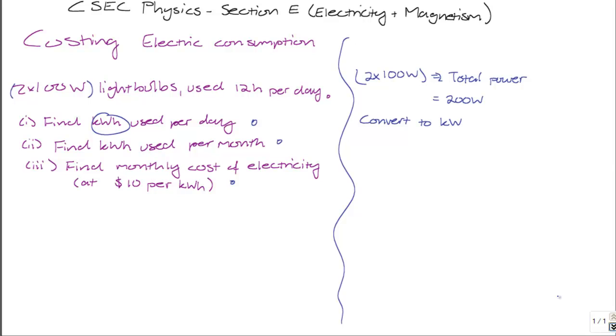Now, one kilowatt is equal to 1000 watts. So the amount of power used by these two light bulbs can be converted to kilowatts by dividing the total consumption, 200 watts, divided by 1000 watts, because there are 1000 watts in every kilowatt, which gives you a value of 0.2 kilowatts of consumption.